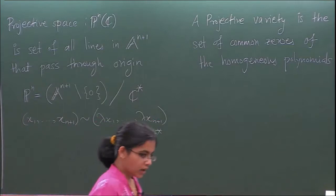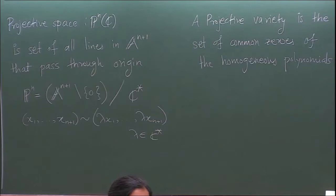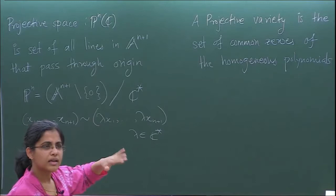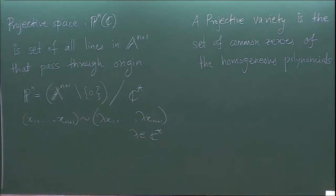A projective variety is the set of common zeros of homogeneous polynomials. We consider homogeneous polynomials because of this quotient — when you scale by a scalar, you want the vanishing to be well-defined. So we take homogeneous polynomials on A^(n+1), i.e., in n+1 variables.